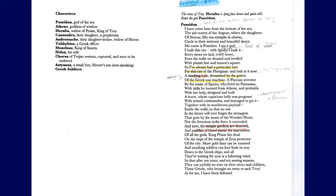The prologue begins with stage directions which outline where we are — the ruins of Troy — that Hecuba is lying face down and quite still, and then 'Enter the god Poseidon.' I definitely encourage you all — in fact you should all at some stage be quoting the stage directions in your essay. They provide important information; you shouldn't just be relying on what the characters say.